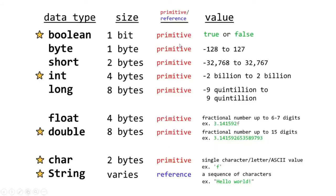There are eight primitive data types and a special reference data type called a string. Anything noted with a star is particularly important. Our first data type is boolean — this has a size of one bit so it can only hold two values: true or false. If we're assigning a boolean value we would type either equals true or equals false. For example, in a light switch program, if the switch is on the value is true; if it's off the value is false. That's why it only uses one bit of memory.